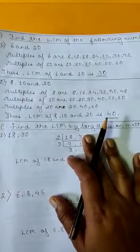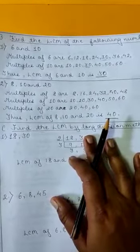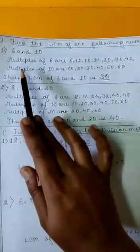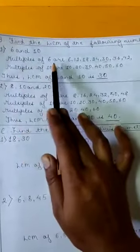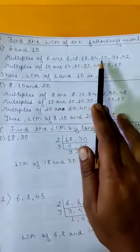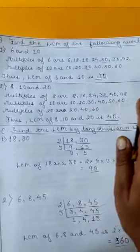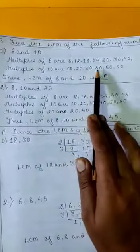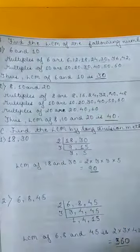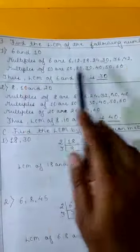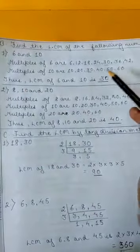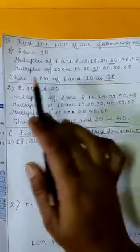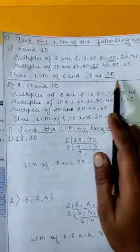Then we will find the LCM of the following numbers. You have to find the Lowest Common Multiple. First question: 6 and 10. First find out the multiples of 6: 6, 12, 18, 24, 30, 36, 42. Then multiples of 10 are 10, 20, 30, 40, 50, 60, 70, 80. Then find the Lowest Common Multiple. See here which is common — 30, yes, and it is the lowest. So the Least Common Multiple of 6 and 10 is 30.